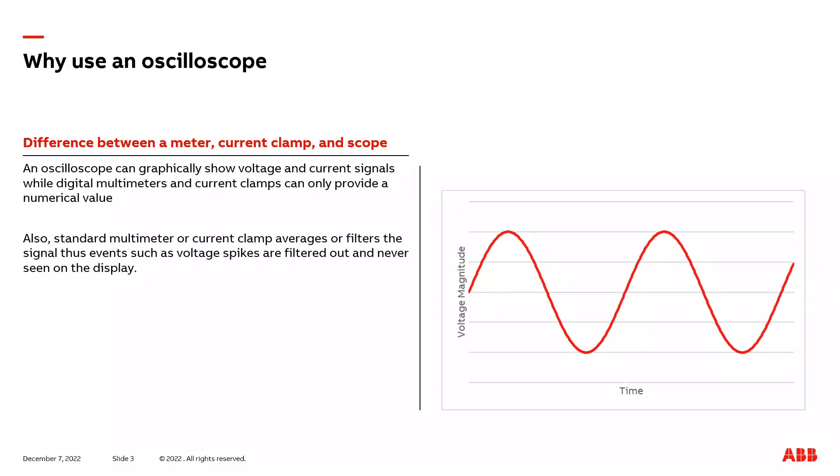So what do we want to use an oscilloscope instead of a basic multimeter or current clamp when trying to troubleshoot issues with a variable frequency drive? The great benefit an oscilloscope has over a basic multimeter or current clamp is that a scope can actually graphically show you the voltage or current signal. A multimeter or current clamp is just going to show you a numerical value only, and the basic meter or current clamp is only going to show you an average value also. You will not see potential transient events that could be occurring on the voltage or current signal.